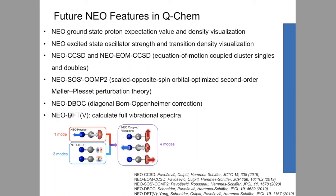Last but not least, we are putting in the NEO-DFTV method, which can calculate the full vibrational spectrum. NEO-DFTV works by first doing a NEO Hessian to get the classical nuclear vibrations, then coupling with the NEO-TDDFT approximation for the quantum nuclear vibration modes. From this, we build an extended NEO Hessian to get NEO-coupled vibrations, which also include anharmonicity. References for these methods are listed for further reading.